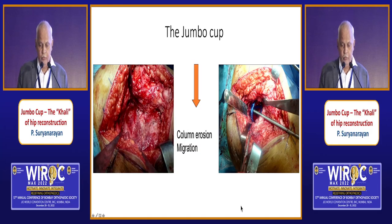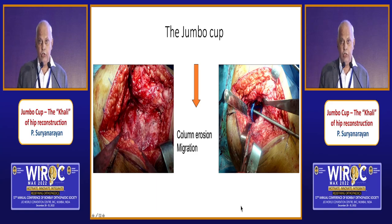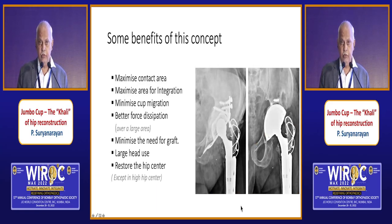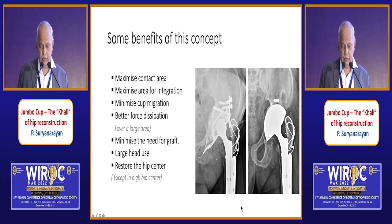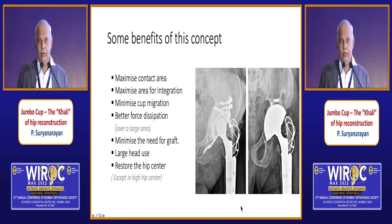Benefits of the Jumbo Cup concept: it maximizes contact area, there is better area of integration, it obviates the need for graft or augments, load dissipation is very good, and you can restore the hip center in most situations. The bigger the cup, the possibility of using a larger head also increases. The fundamental dictum is cup fixation happens between the anterior and posterior columns — you need a diametric fit in some axis.